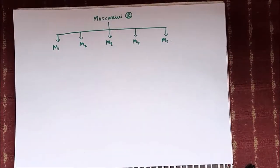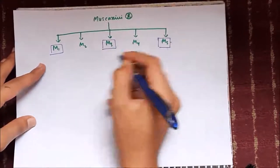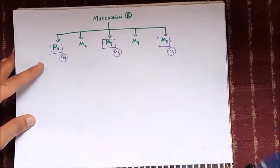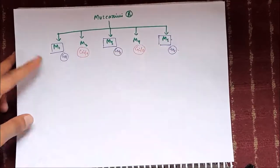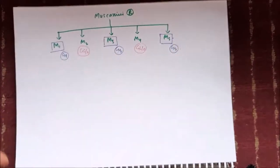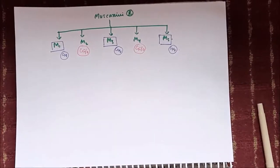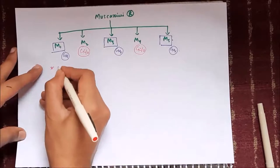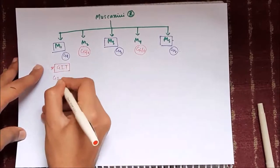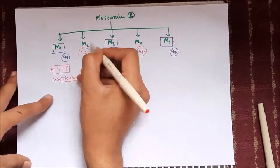Muscarinic receptors are divided into five types: M1, M2, M3, M4, and M5. M1, M3, and M5 are GQ subtypes of G protein coupled receptors, causing increase in intracellular calcium. M2 and M4 are GI/O subtypes. Their locations can be remembered by the mnemonic 'pahle khau, phir dil lagau, baki kam baat mein' — M1 is primarily in the gastric gland.